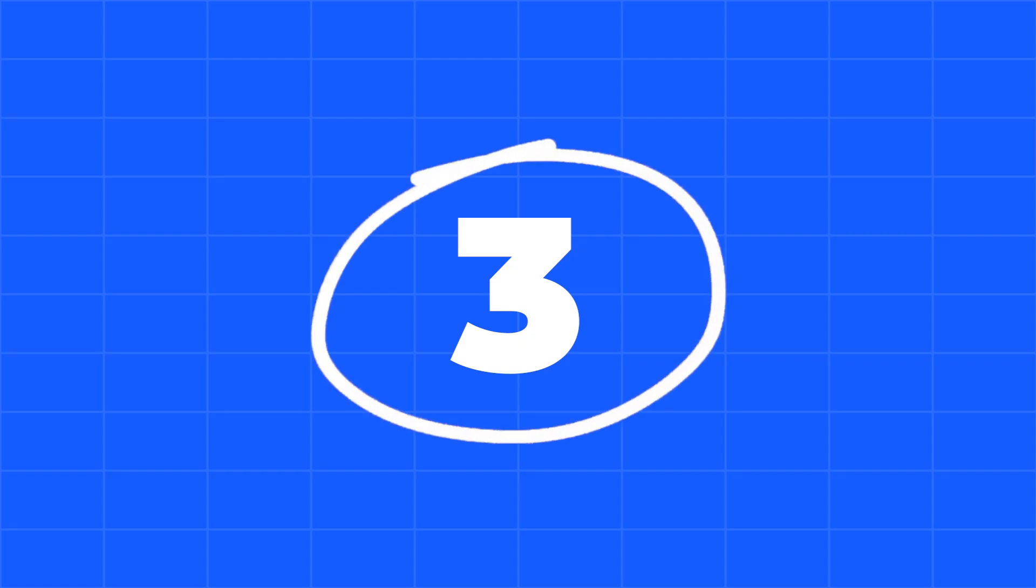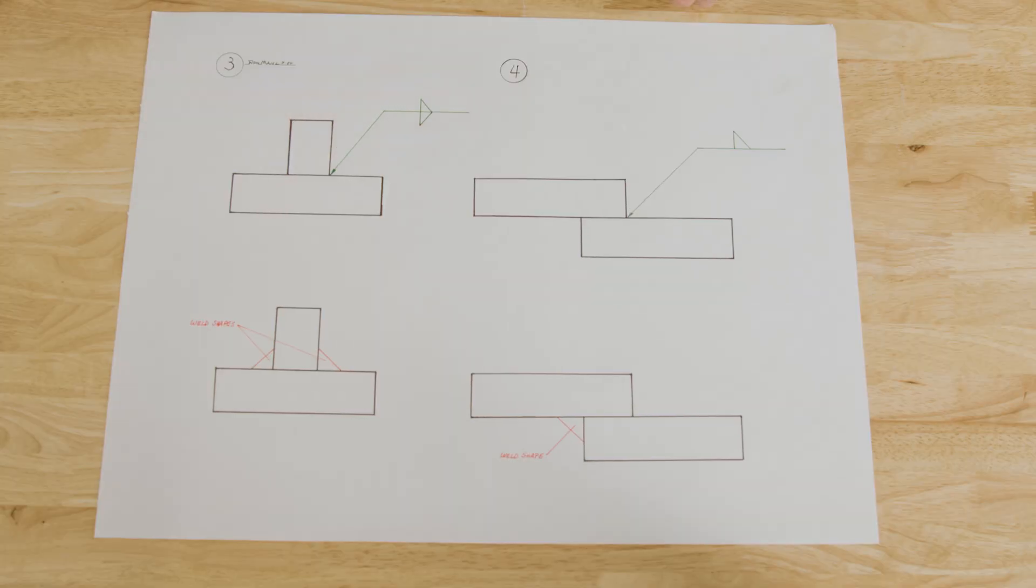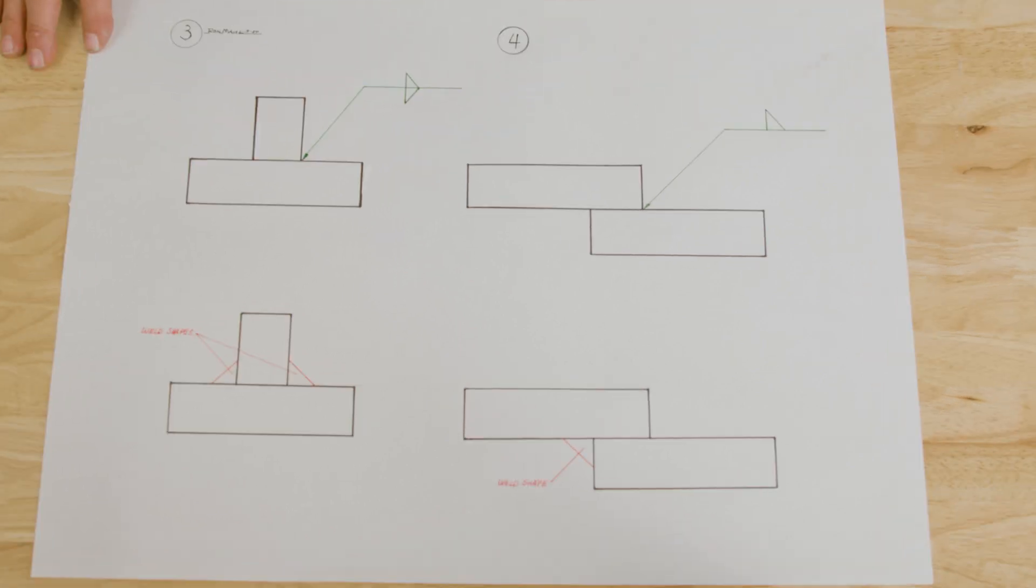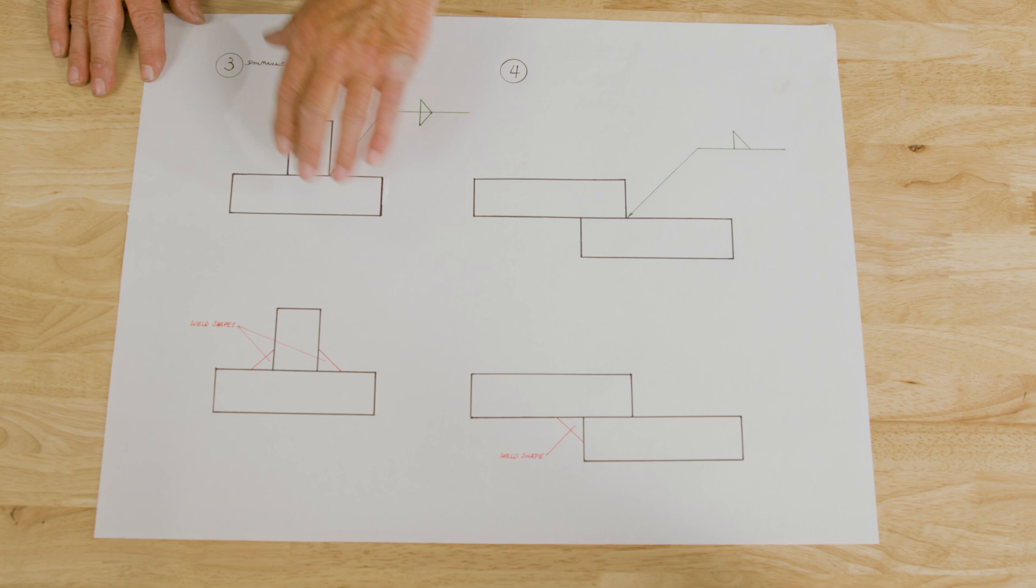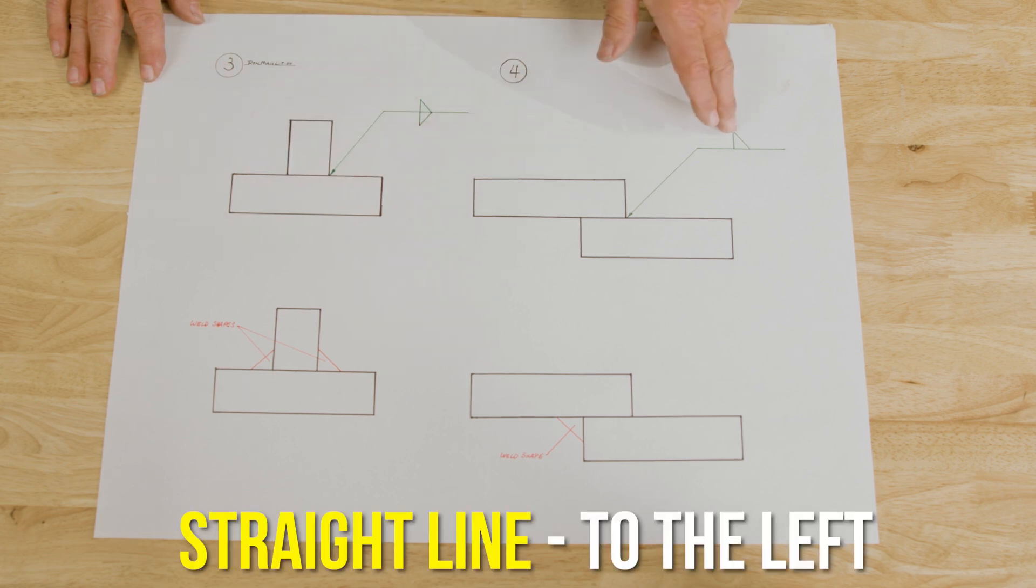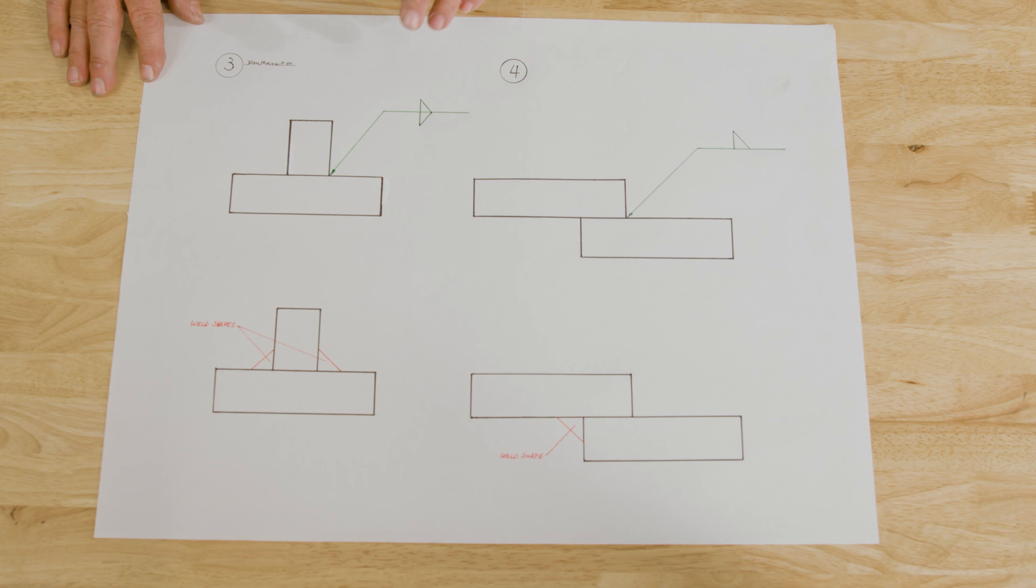Okay, here we have the weld symbol calling for two fillets. Whenever you see a fillet or any straight line on the weld symbols, it will always be to the left side. It doesn't matter how they end up on the steel. When it's drawn, the straight line is always to the left because you read these symbols left to right, just like you do books.